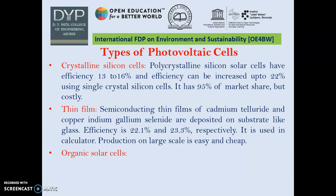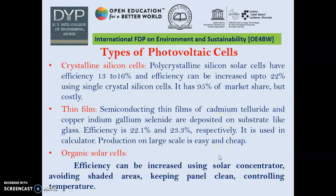We can also go for organic solar cells, where we can think of polymers. Thin-film efficiency is better and they are cheaper compared to silicon, but the problem is cadmium can be toxic and may give rise to pollution. Efficiency can be increased using solar concentrators, because solar energy received is very dilute. We should also avoid shaded areas, keep panels clean, and control the temperature.